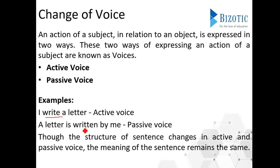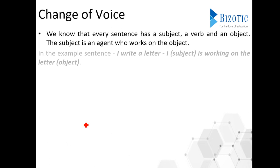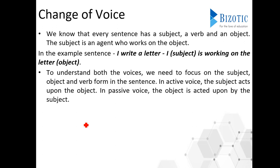We know that every sentence has a subject, a verb, and also an object. The subject is an agent who works on the object. For example, in the active voice 'I write a letter,' 'I' is the subject and 'letter' is the object, so we can say that the subject is working on the object.